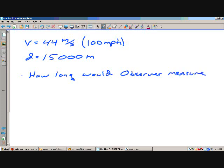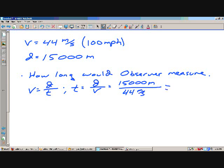With the observer, we get to use our basic equation, velocity is distance divided by time. So, time is distance divided by velocity. We plug in 15,000 meters, divided by 44 meters per second. It's about 341 seconds.